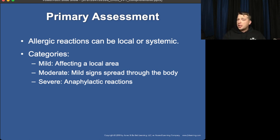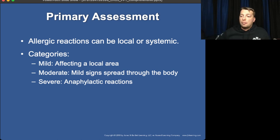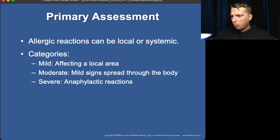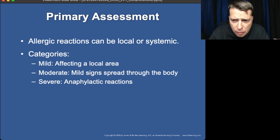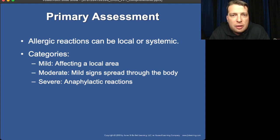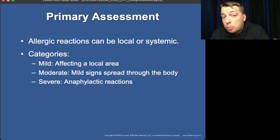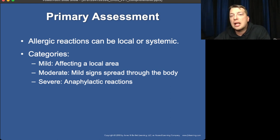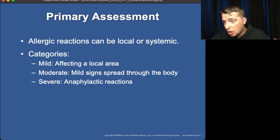In a serious allergic reaction scenario, we don't have a lot of time — they can develop problems very quickly. A mild allergic reaction shows hives, itching, redness, or swelling at the site of contact. A moderate reaction has those same signs spread throughout the entire body but still in only one organ system. Severe reactions are anaphylactic — multiple systems are activated. Remember: allergic reaction is one system, anaphylactic is more than one system.